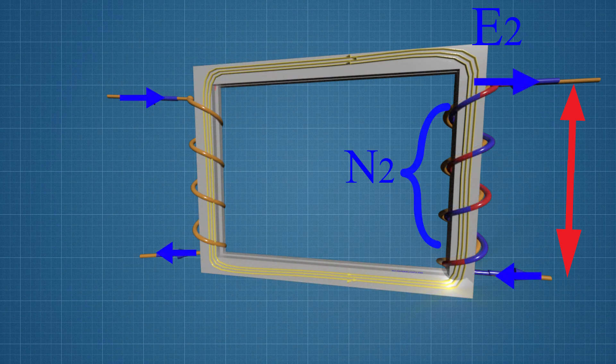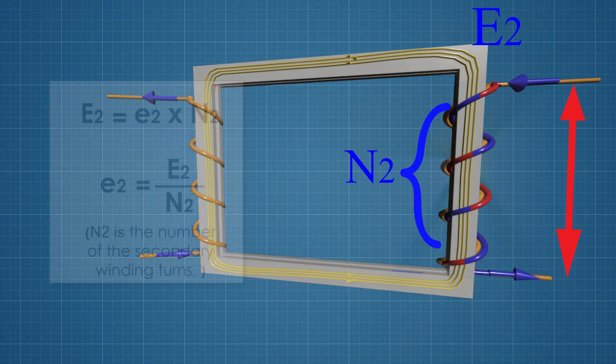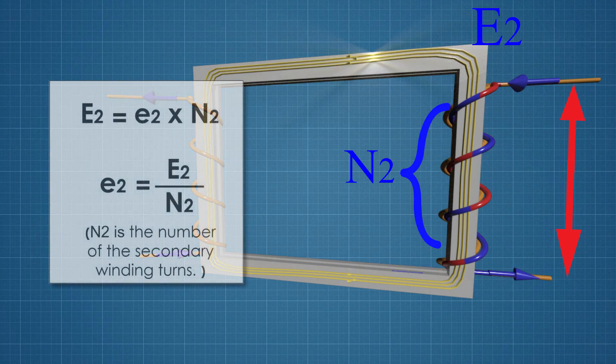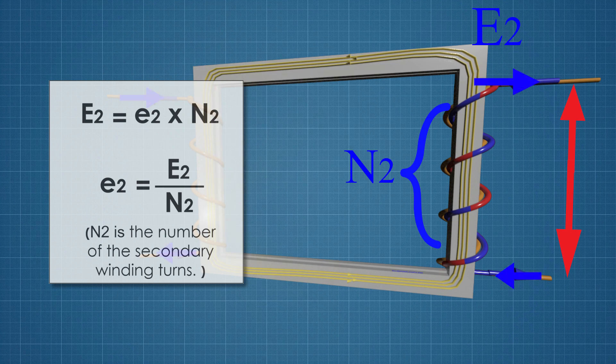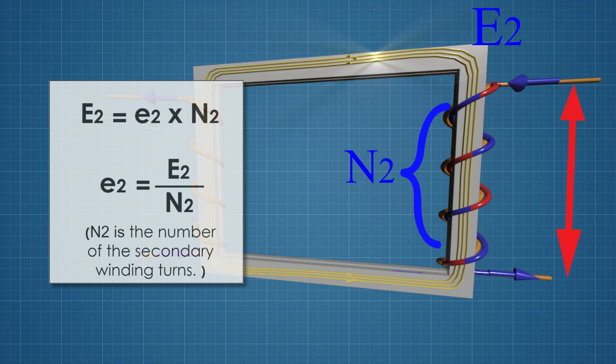An explanation of how exactly a transformer converts alternating current will be given using mathematical formulas. According to electromagnetic induction, EMF is induced on the ends of the second coil and comprises the sum of EMFs induced in each particular turn. This means: E2 = e2 × N2, or e2 = E2/N2.